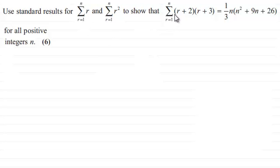To show that the sum of r plus 2 times r plus 3 going from r equals 1 to n is equal to one third n times n squared plus 9n plus 26 for all positive integers n. And this is for six marks.